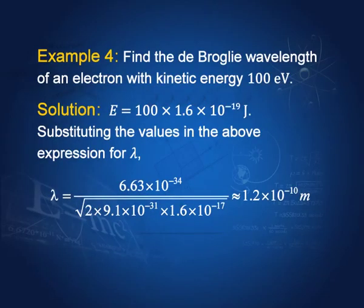Find the de Broglie wavelength of an electron with kinetic energy equal to 100 electron volts. E is given, so all that we do is substitute E, and we know M and h. Therefore we can find lambda. If you calculate correctly, you will get lambda equal to 1.2 × 10⁻¹⁰ meters.